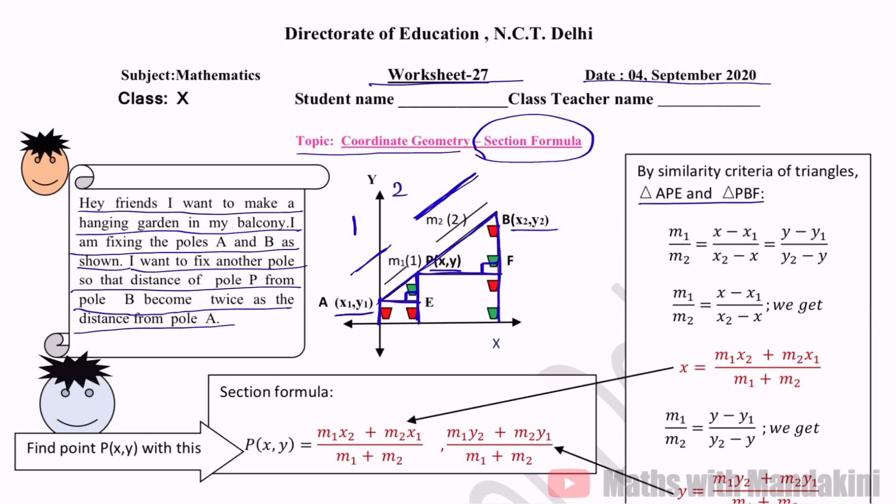Now we have triangle APE and triangle PBF. So this is a small triangle and a big triangle. These sides will compare us. This is M1 side and this is M2. So M1 upon M2 is equal to base. Base we can get x minus x1 and x2 minus x. Similarly, y minus y1, y2 minus y. Now we compare the first part. We compare and cross-multiply.